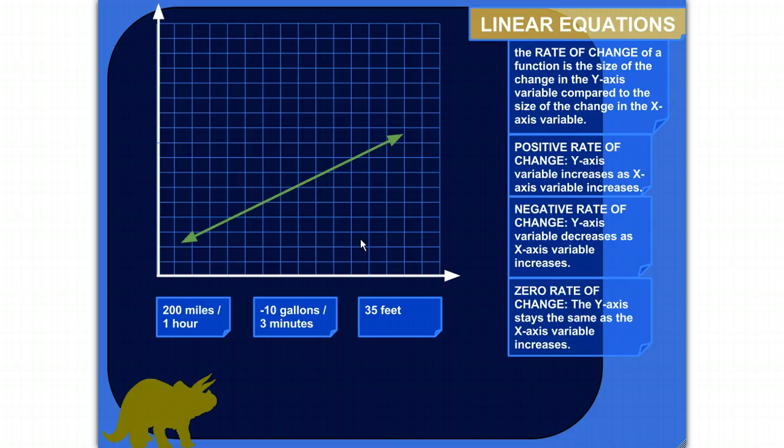So the rate of change of a function is how much the y-axis variable is changing relative to how quickly the x-axis variable is changing. So it's kind of a ratio. You can think of it as the change in y compared to the change in x, or the difference in the y's over the difference in the x's. And so there's different kinds of rates of change that we can classify.